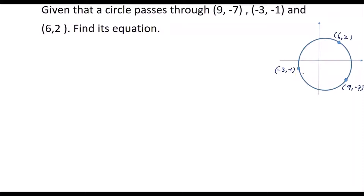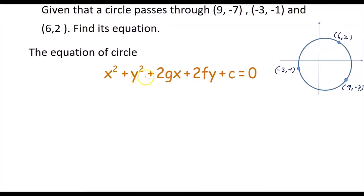We are going to use the general form of the equation of the circle to solve this problem. We will substitute these three points for x and y into the general equation of the circle: x² + y² + 2gx + 2fy + c = 0, where we need to find the unknowns g, f, and c. We need three equations involving g, f, and c to solve the system of linear equations.